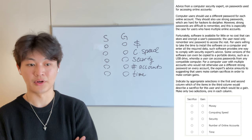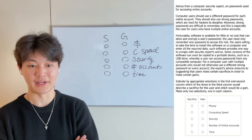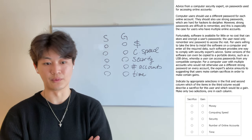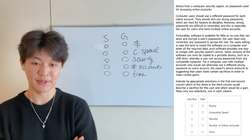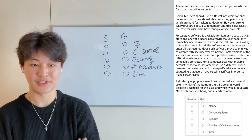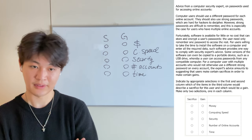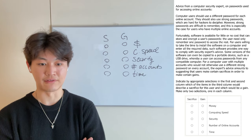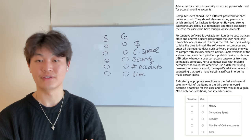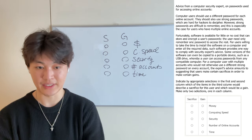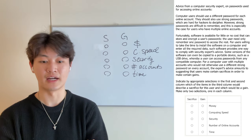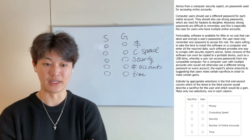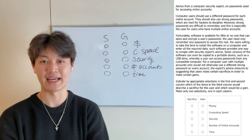Some versions of the software can even be copied to a portable device, such as a USB drive, whereby a user can access passwords from any compatible computer. For a computer user with multiple accounts who would not otherwise use a different strong password on every account, the expert's advice amounts to suggesting that users can make certain sacrifices in order to make certain gains. The question asks: indicate which of the items in the third column would describe a sacrifice for the user and which would be a gain — make only two selections, one in each column. We've got five categories: money, computing speed, security, number of online accounts, and time. One is a sacrifice and the other is a gain.